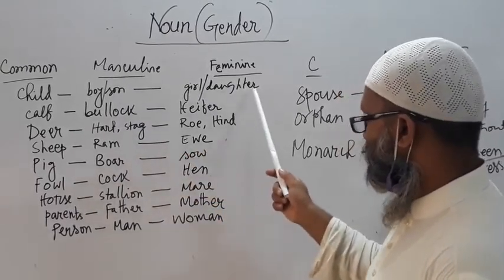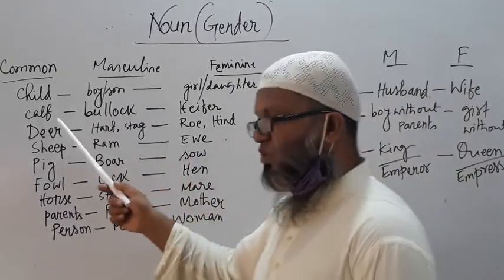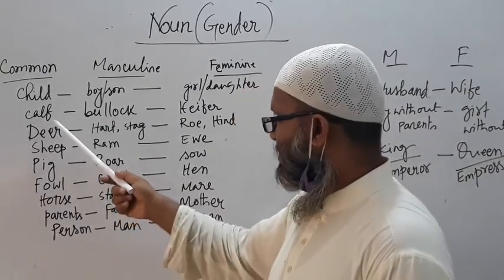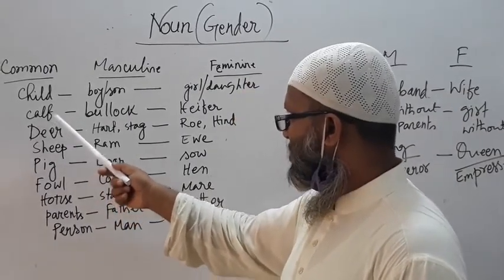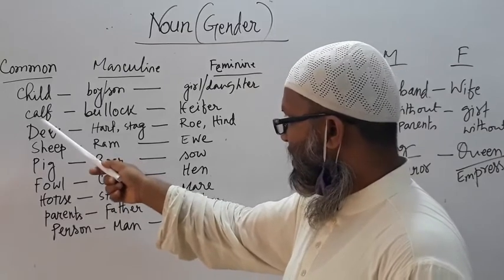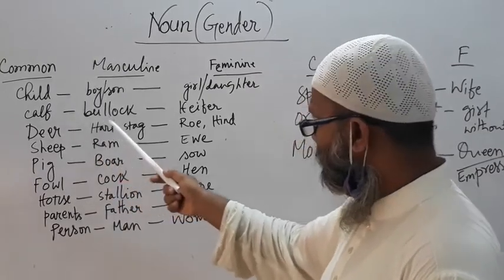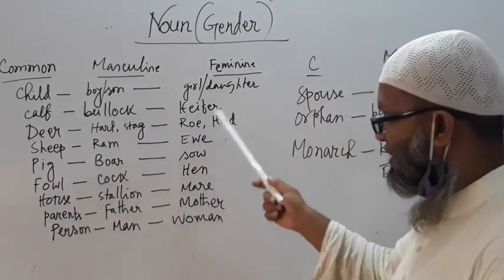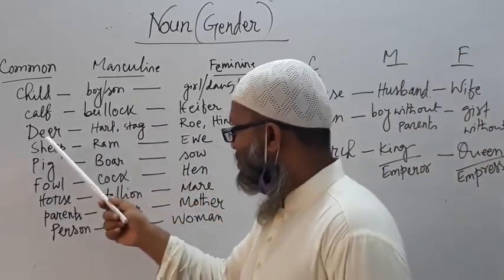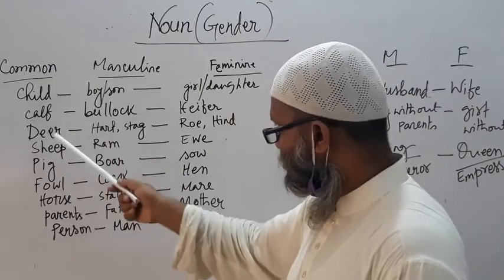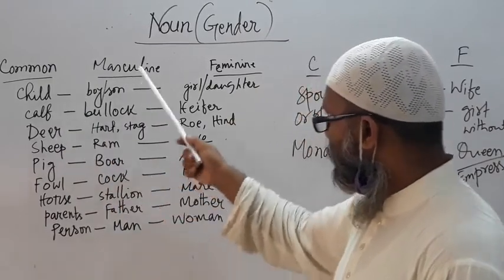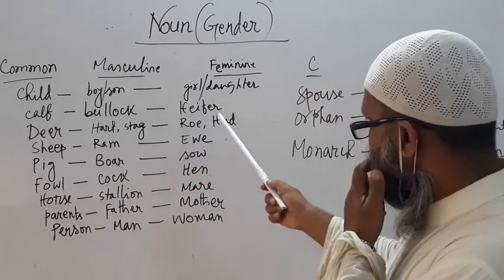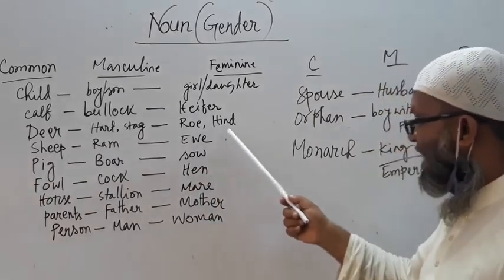And then girl or daughter. In this way, 'calf' is another common gender — it may be male or female; suppose a bullock, or heifer which is feminine. Deer is also common gender, and its masculine form is hart or stag, and its feminine is doe or hind.